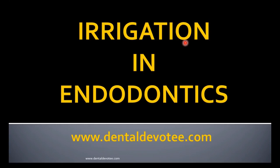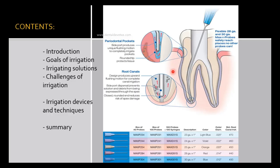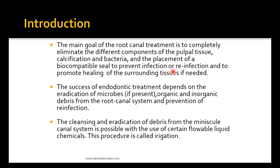Hello everyone. In today's video we'll be discussing irrigation in endodontics. The contents of today's presentation are: introduction, goals of irrigation, irrigating solutions, challenges of irrigation, irrigation devices and techniques, and lastly a summary. The main goal of root canal treatment is to completely eliminate the different components of pulpal tissue, calcifications, and bacteria, and the placement of a biocompatible seal to prevent infection or reinfection and to promote healing of the surrounding tissues if needed.